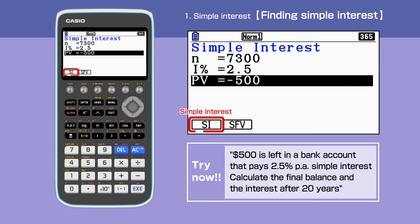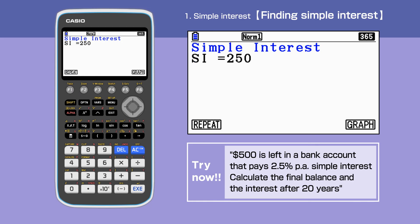Pressing F6 gives SI simple interest. The interest amount is $250.